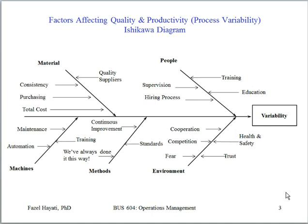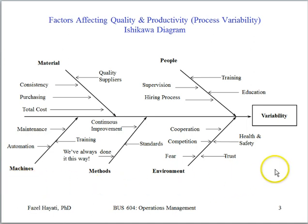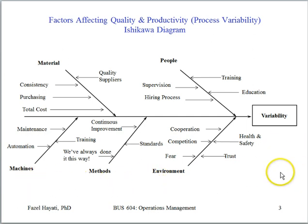If we consider the outcome or the output of a process, that output is subject to or reflects many factors affecting variation. This is called the Fishbone Diagram, a cause and effect diagram, and sometimes named after its inventor, Dr. Ishikawa — the Ishikawa Diagram. In this cause and effect relationship, we'll look at some of the causes that produce this effect and what factors affect the variability in a process.